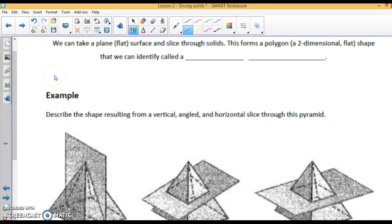We can take a plane, a flat surface, and slice through a solid. This is called a cross-section.